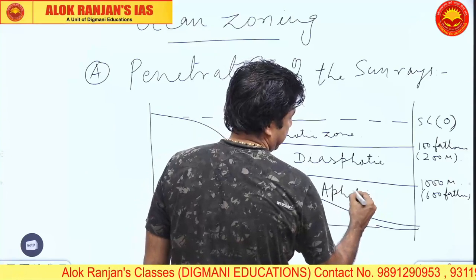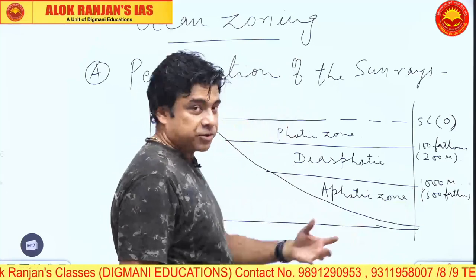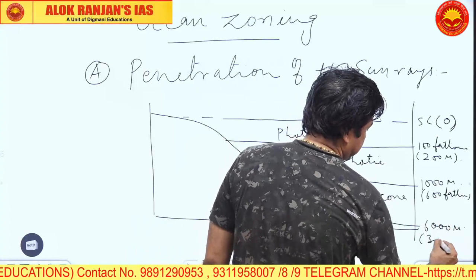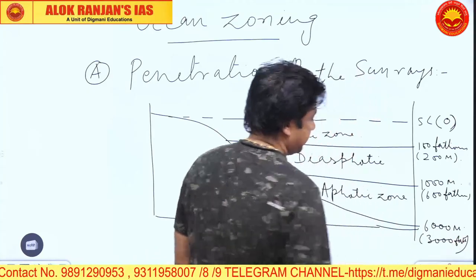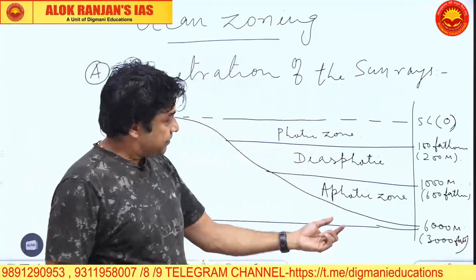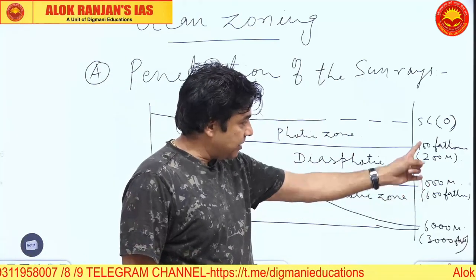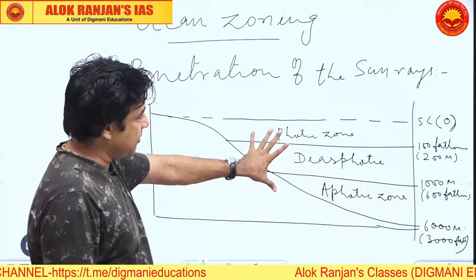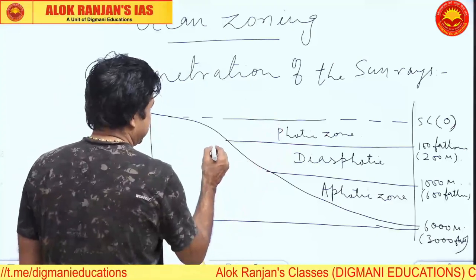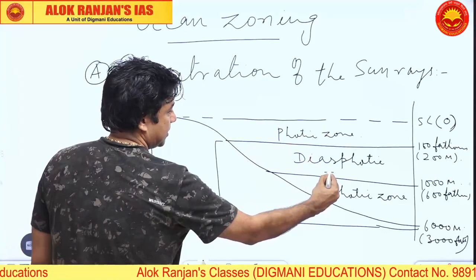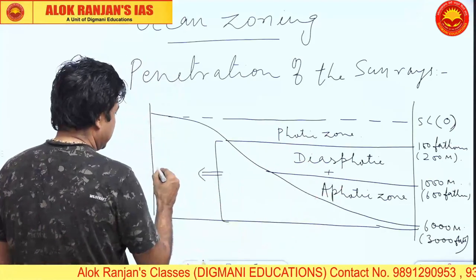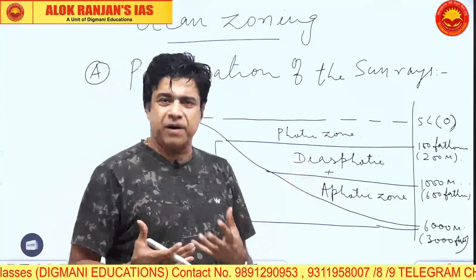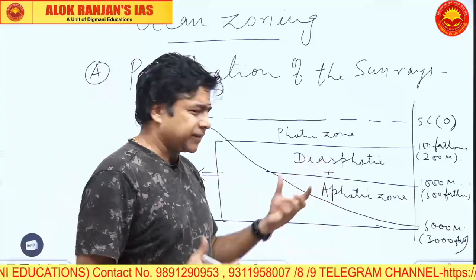Beyond that is the aphotic zone, extending to approximately 6,000 meters or 3,000 fathoms at the bottom of the ocean. Some books show the diasphotic and aphotic zones together, simply calling both 'aphotic' — and rightly so, because in these zones life is not found. They are called biological deserts, as Sun rays are not active and there is no bioproductivity.